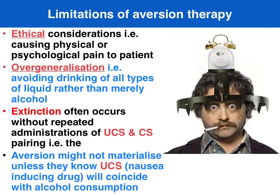In terms of the limitations of aversion therapy, there are major ethical issues even when the patient consents to being subjected to physical or psychological pain. It can create overgeneralisation — in the case of aversions to alcoholic beverages, the patient can overgeneralise their aversion to all types of liquids, including water, which creates health issues. Additionally, extinction of the aversion can occur quite easily, particularly for social drugs like alcohol or smoking where regular exposure occurs. All it would take is one puff or one drink of alcohol and the aversion is extinguished without frequent re-pairing of the painful stimulus — electric shocks — with the conditioned stimulus, such as the sight and smell of alcohol or cigarettes.